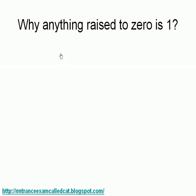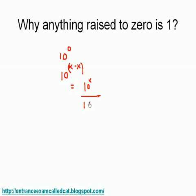Why is anything raised to 0 equal to 1? Let us consider 10⁰. We can write it as 10^(x−x), because x−x equals 0. This can be further simplified as 10^x ÷ 10^x. These two cancel each other and so the answer is 1. That is why we always consider anything raised to 0 to be 1.